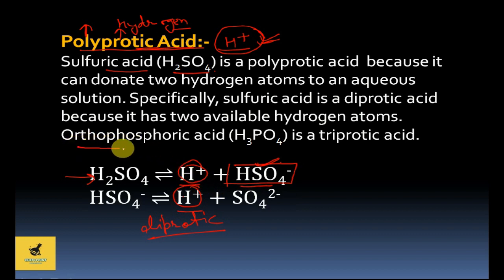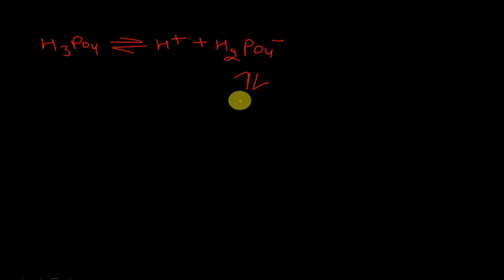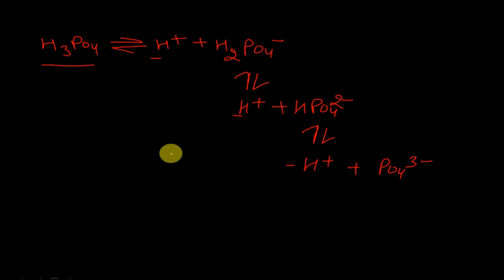Another example is orthophosphoric acid H₃PO₄. Its reaction in water gives H⁺ and H₂PO₄⁻. This species can further break to give H⁺ and HPO₄²⁻, and further still to give H⁺ and PO₄³⁻. In this manner, H₃PO₄ gives 3 H⁺ ions, so it is called a triprotic acid, or simply a polyprotic acid.